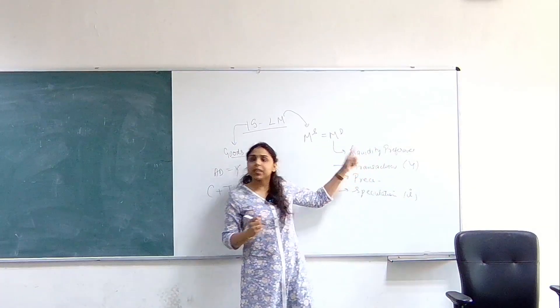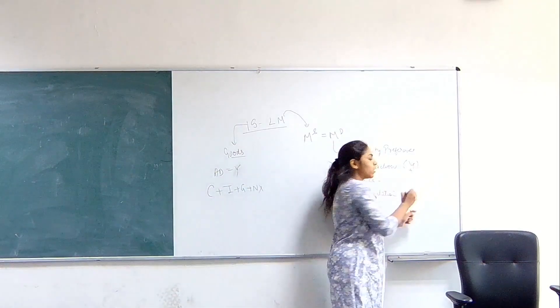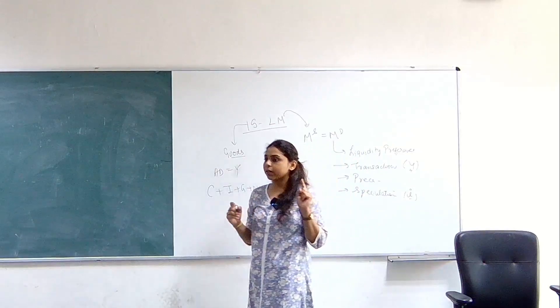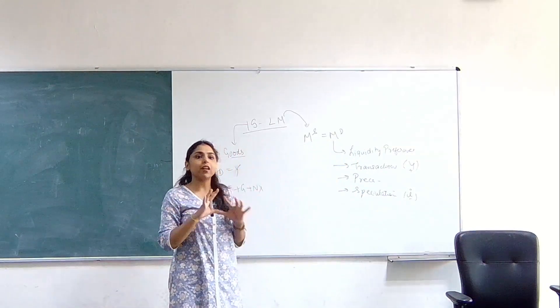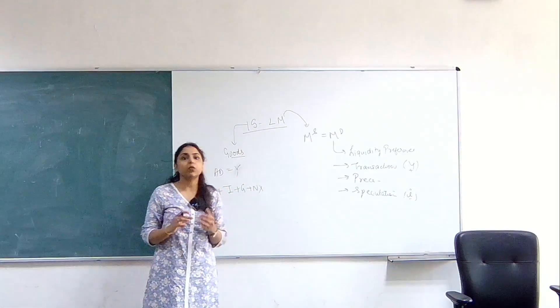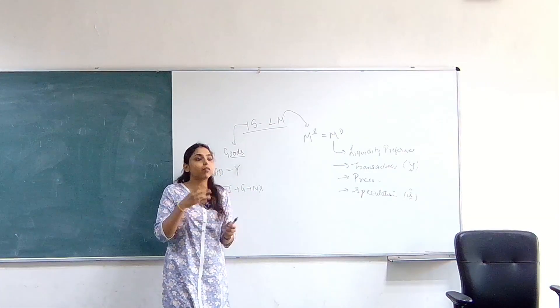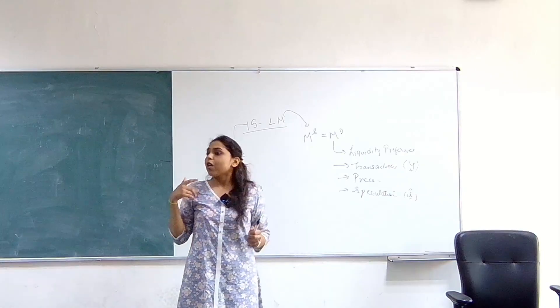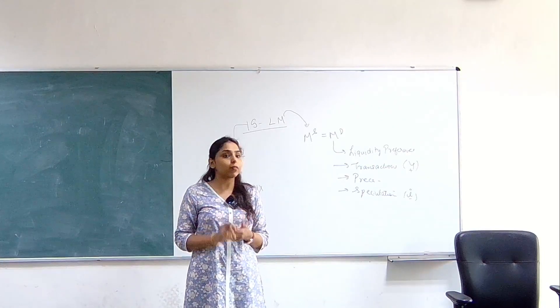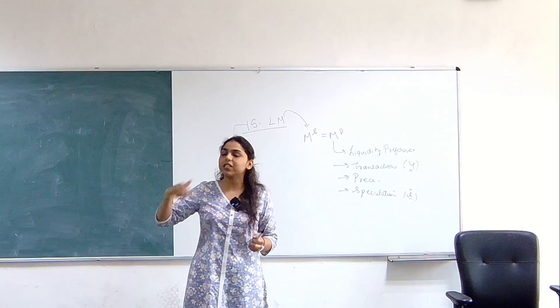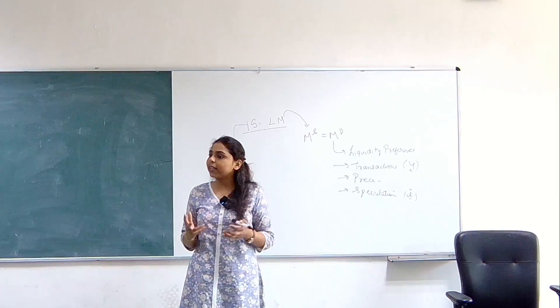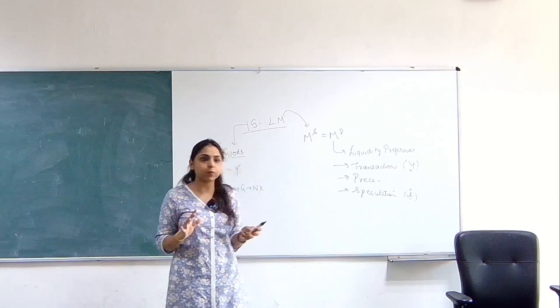With income, there is a positive relationship. And with interest rates, there is a negative relationship of money demand. In the goods market, we also discussed about the money multiplier, the government expenditure multiplier. What happens when the government increases government expenditure? Then what is the relationship of that on the total aggregate demand and output? We have discussed all these points in the previous lectures.